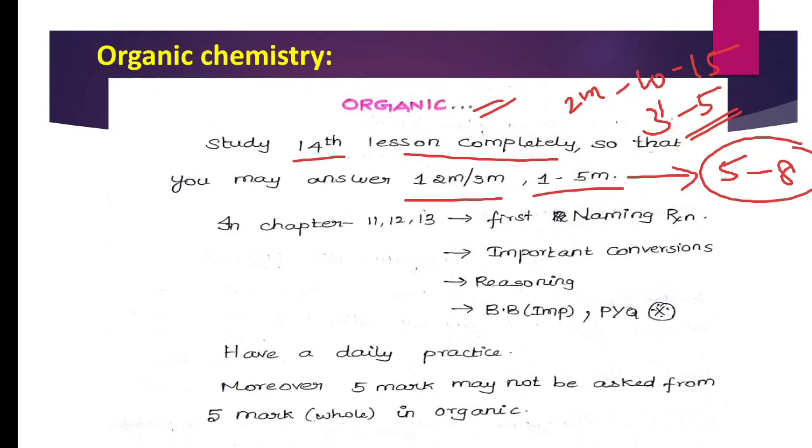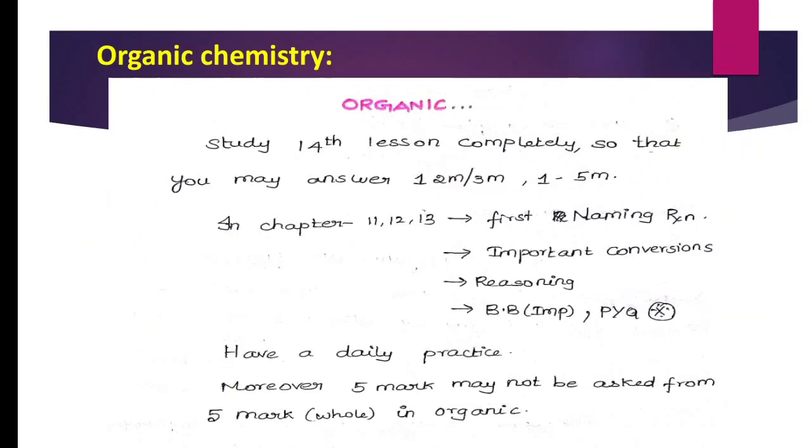When you look at 2-marks and 3-marks, there are 2 marks. If you look at 5-marks, there is 1 question. To score centum in organic chemistry, first is Chapter 11, 12, 13. First go for naming reactions. For naming reactions, 2-marks or 3-marks are possible.